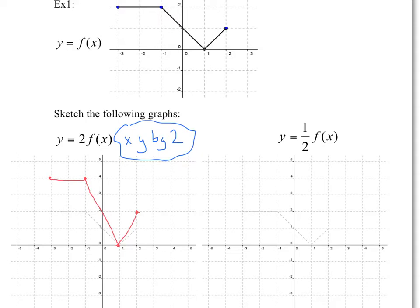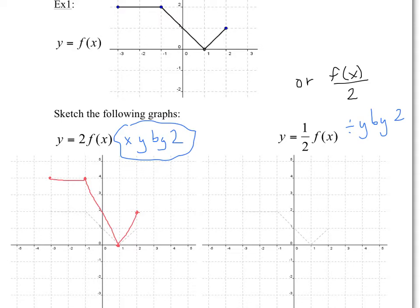You can probably guess what's going to happen over here. Here you have one half of f(x), which you can also write as f(x) divided by 2 — they're the same thing. Here we have a coefficient of one half, so you're dividing all the y-values by 2. The y-values over here are 2, so now they become 1. The y-value is 0, so that point doesn't change. The y-value is 1, so now the y-value is one half. And here is our graph — for another point, the y-value is 1, now it's one half. There's your graph.